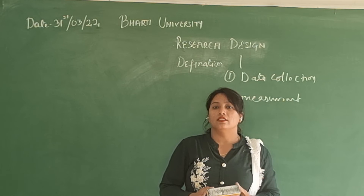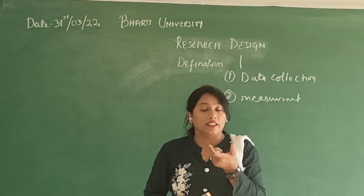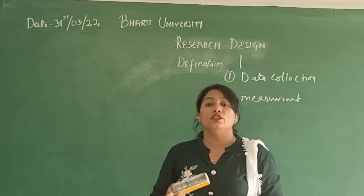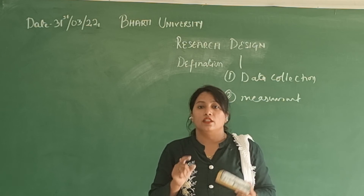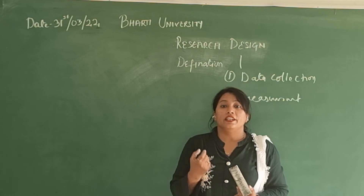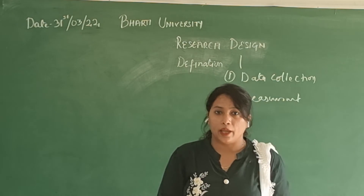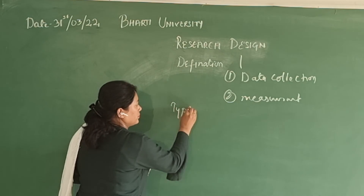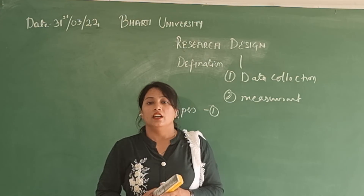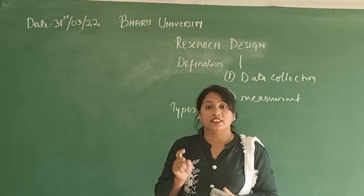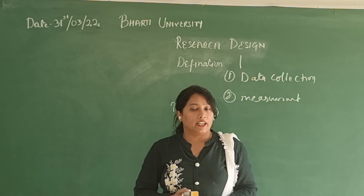The essential elements include an accurate purpose statement. Second, what techniques should be implemented for collecting and analyzing research data? The methods applied for collecting details. Types of research methodology. Probable objections for research. Setting for the research study. The last one is timeline, and measurements of analysis of data.